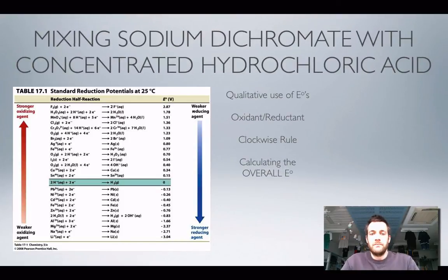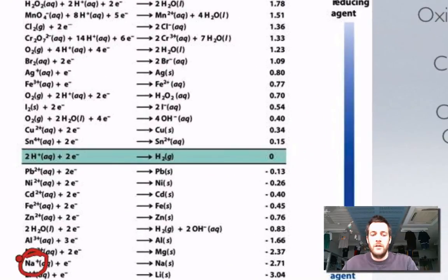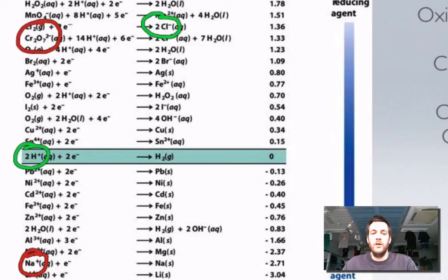This last example is a little bit tricky, and predicting whether this reaction would happen is probably beyond the scope of the WJEC course. But it's a useful thing to go through. I'm mixing sodium dichromate — so I've got sodium ions and dichromate ions — with concentrated hydrochloric acid, giving chloride ions and hydrogen ions.